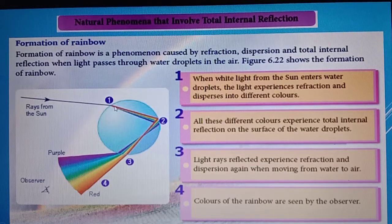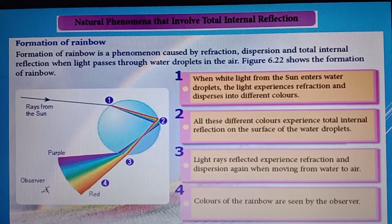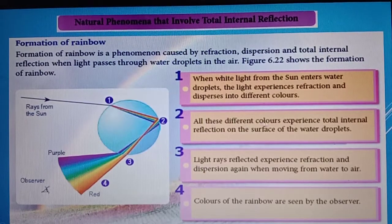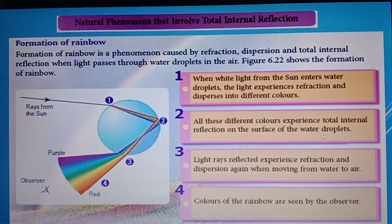The 7 colors are red, orange, green, blue, indigo, and violet. Then when the light reaches point 2, all these different colors experience total internal reflection on the surface of the water droplets.